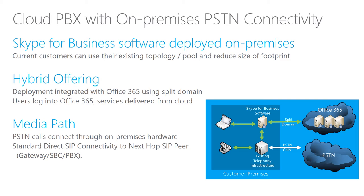Cloud PBX with on-premise PSTN connectivity allows you to use your existing Skype for Business on-premises servers and pools to let your users connect to the PSTN — to place and receive phone calls. A requirement is that you have established hybrid, meaning your Skype for Business on-premises environment is fully connected and enabled for hybrid with Skype for Business Online, sharing the same SIP domains. This also allows you to seamlessly move users between Skype for Business Online and on-premises, depending on requirements.